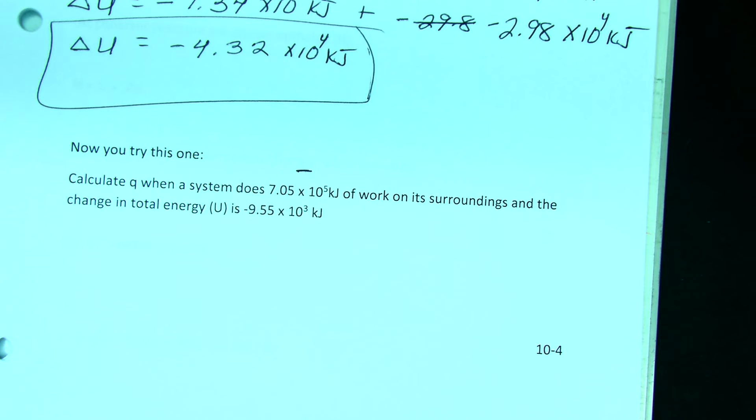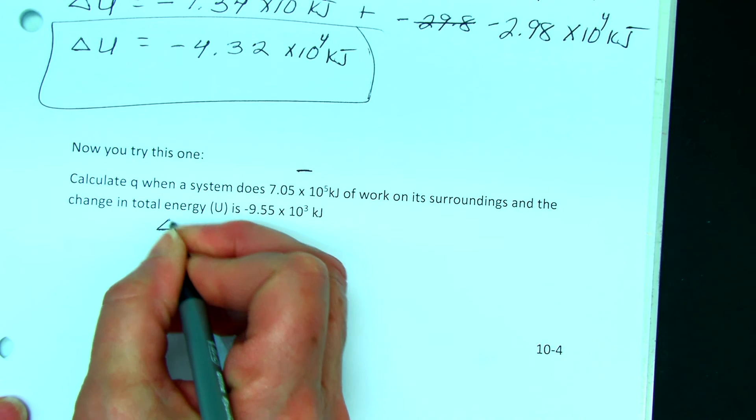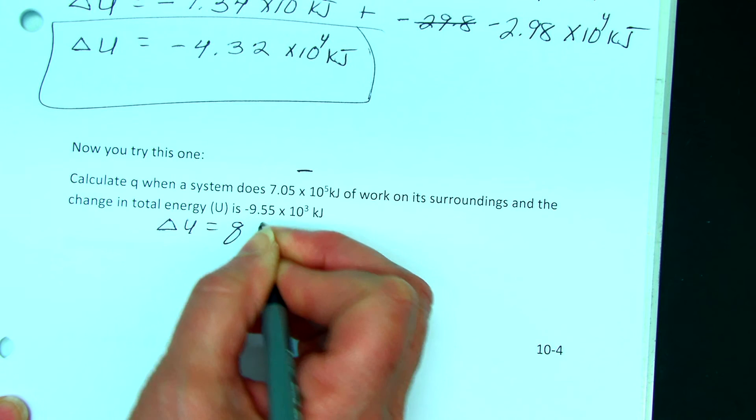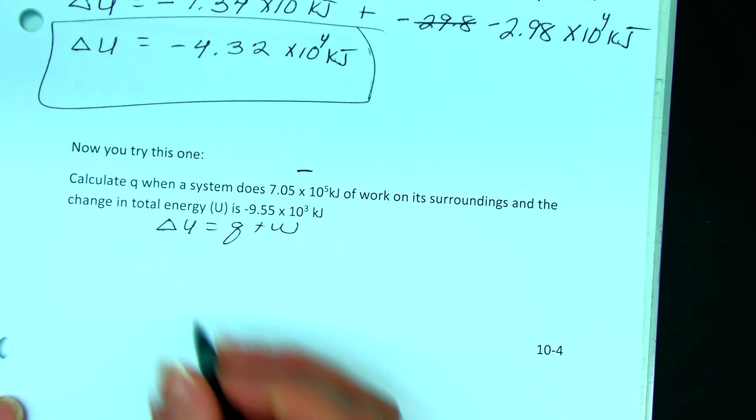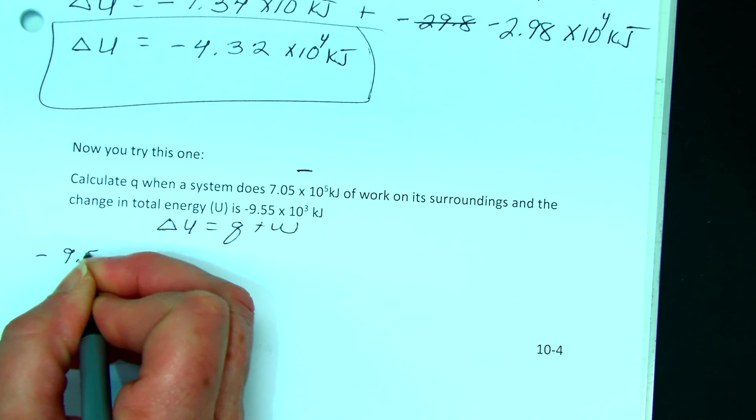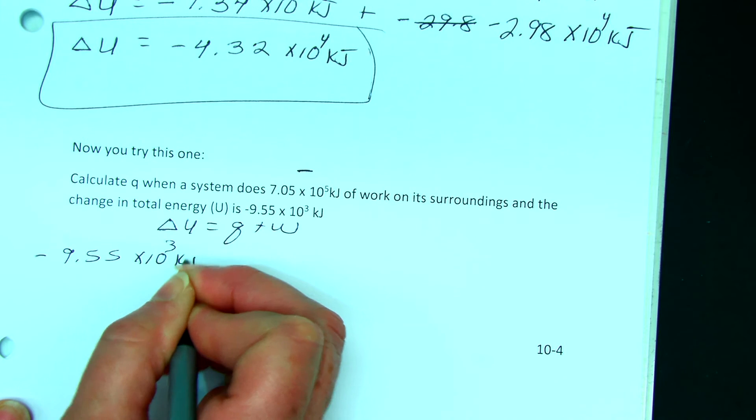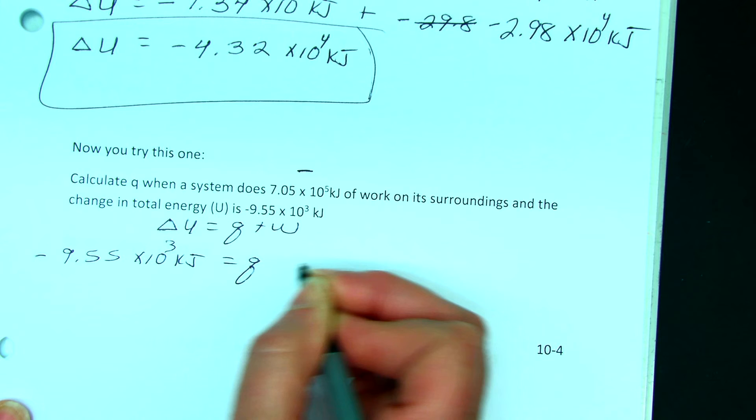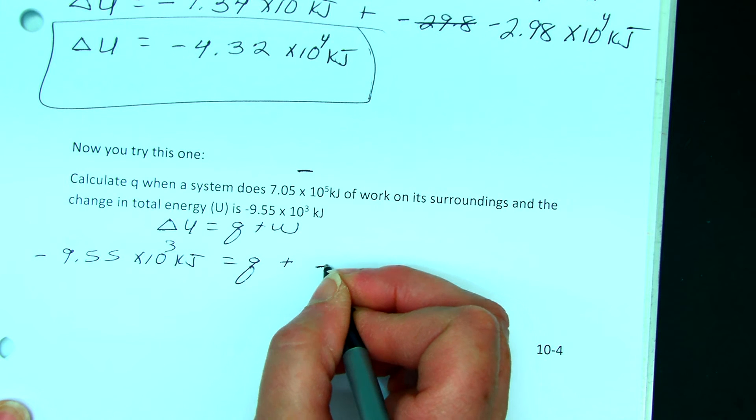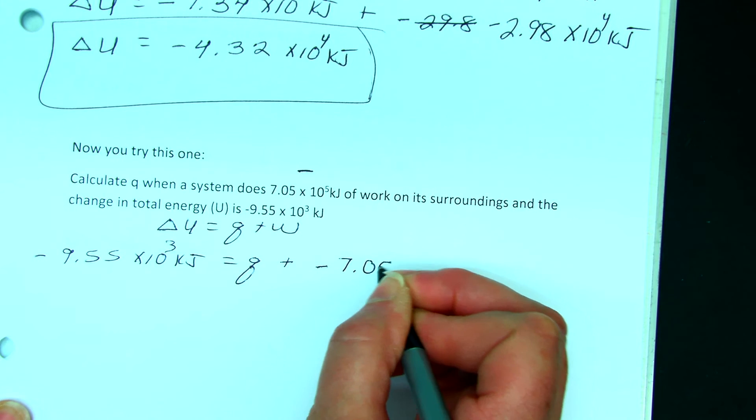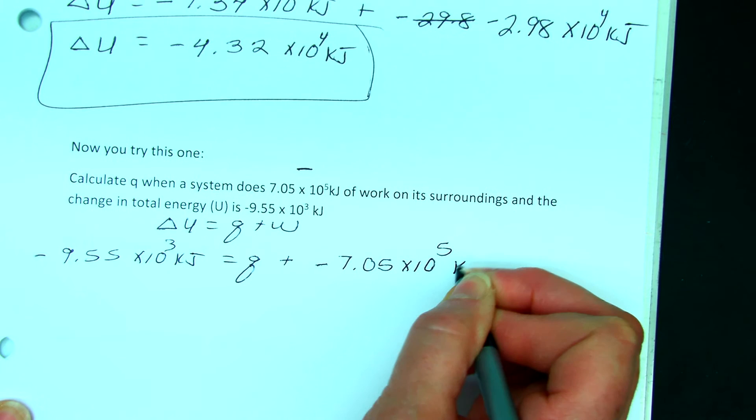And we know the total change. We know delta U is equal to Q plus W. And we know delta U, negative 9.55 times 10 to the 3rd kilojoules, is equal to Q, which is my unknown in this case, plus a negative 7.05 times 10 to the 5th kilojoules.